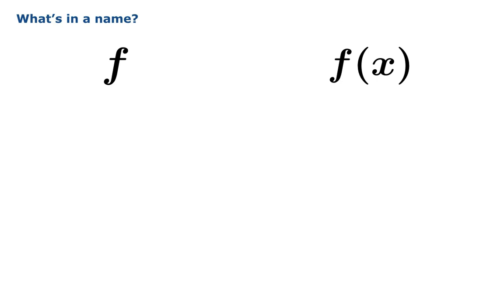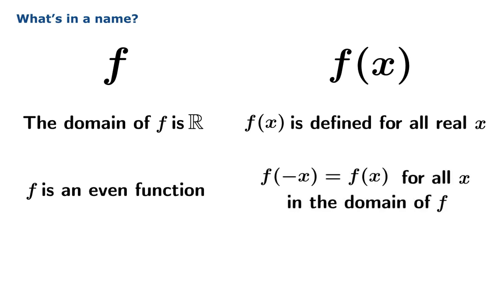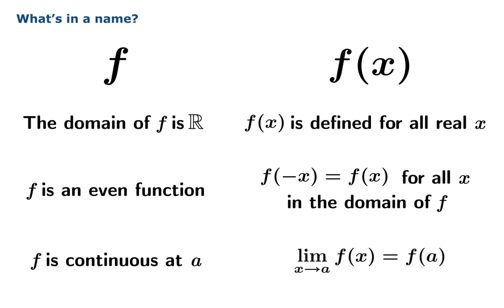For every statement about the function f, there's usually a closely related statement about the value f of x. For instance, if you say the domain of f is ℝ, what you're really saying is that f of x is defined for all real x. If you say f is an even function, you're really saying f of negative x equals f of x for all x in the domain of f. And if you say f is continuous at a, you're really saying the limiting value of f of x as x approaches a is equal to f of a.